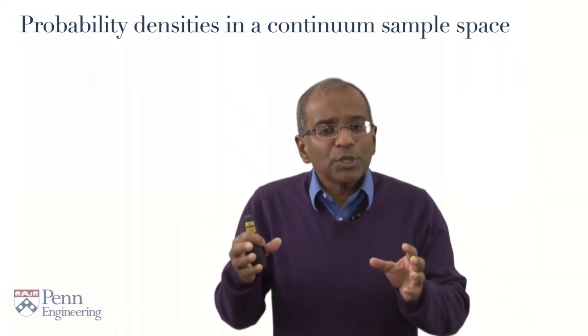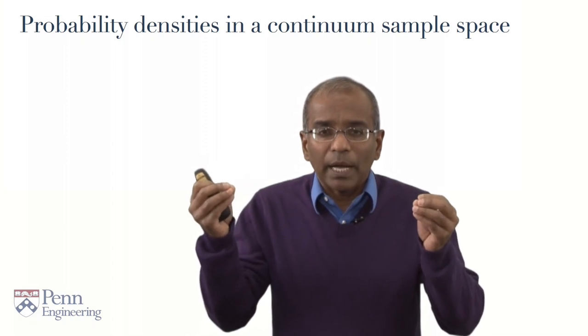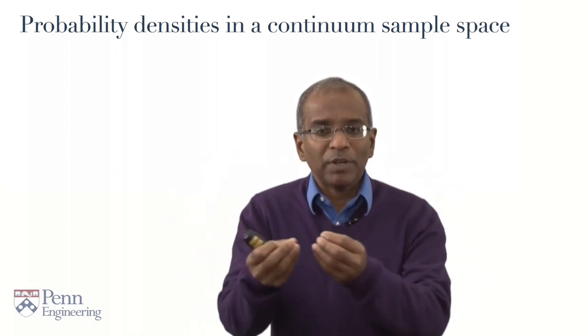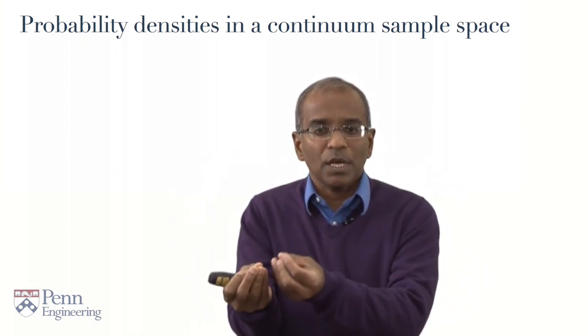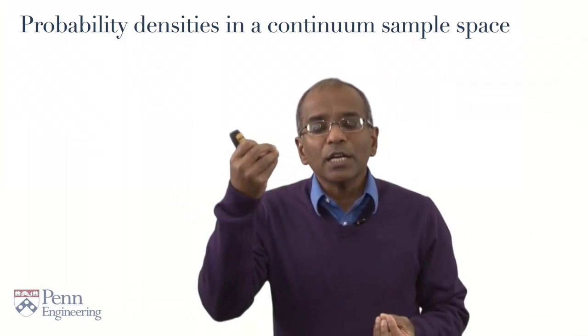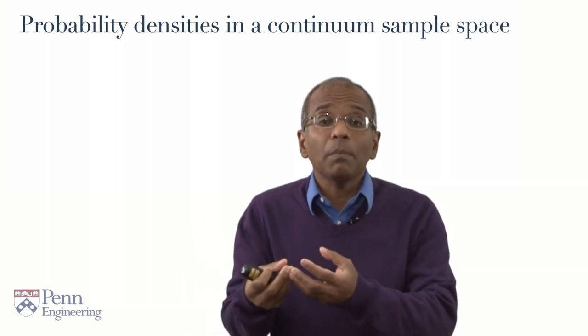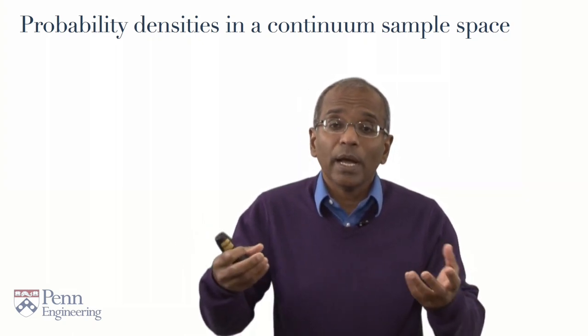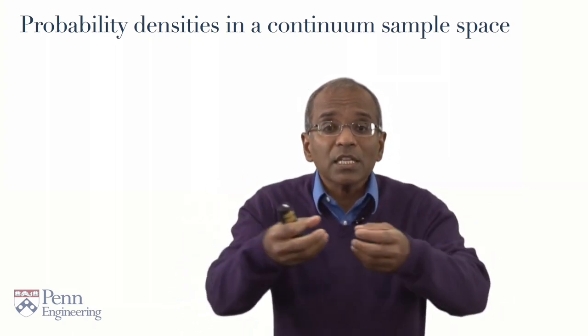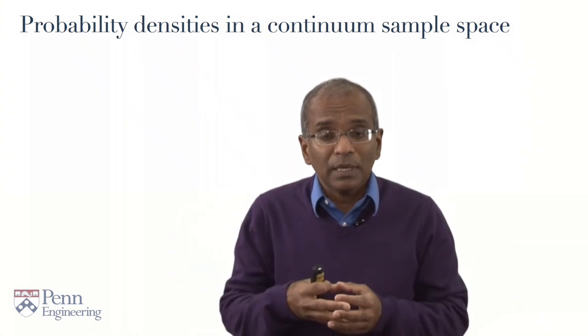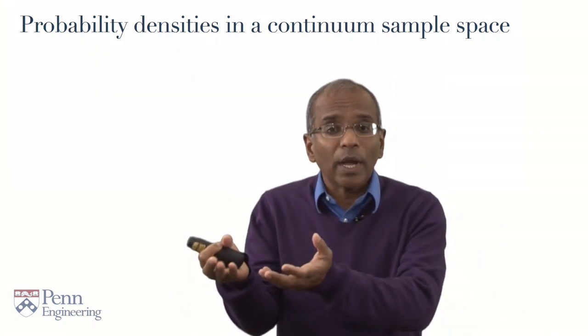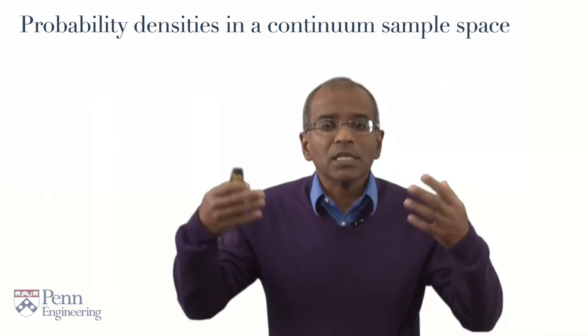The student will come to no harm if she bears firmly in mind that all that is happening when we transition from a discrete experiment to a continuous experiment is that discrete probability masses segue into mass densities, where you have mass per unit length spread over a region, and that sums segue naturally into the appropriate integrals. All else carries through.